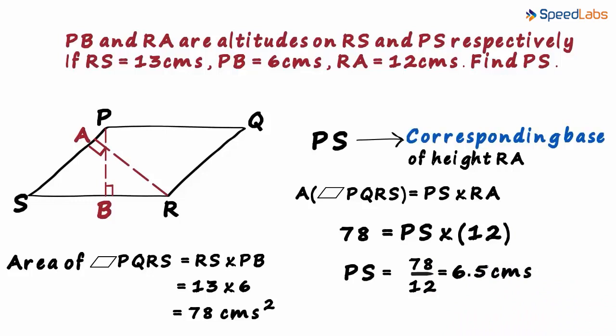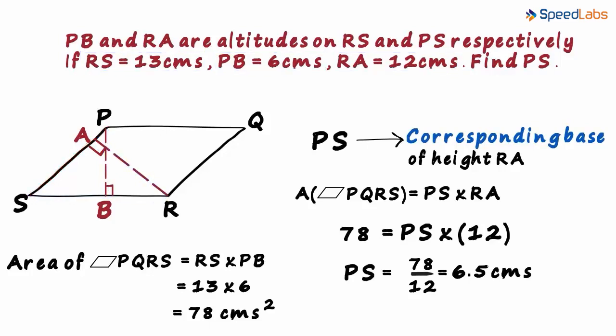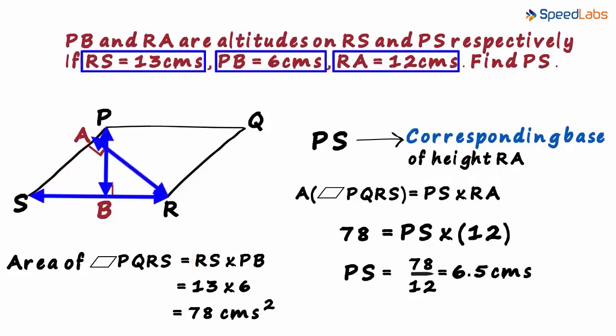So by using the formula for area of a parallelogram, we could find the length of PS. The moment you saw that these three lengths were given and we had to find the fourth one, you would have realized that we will be equating the areas in two different ways. We have these three lengths and we can get the fourth one easily.